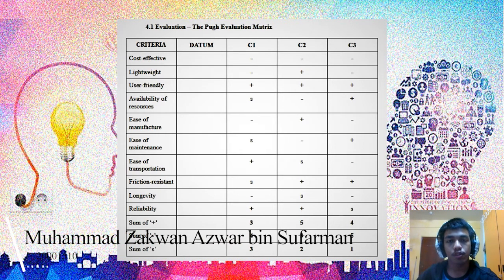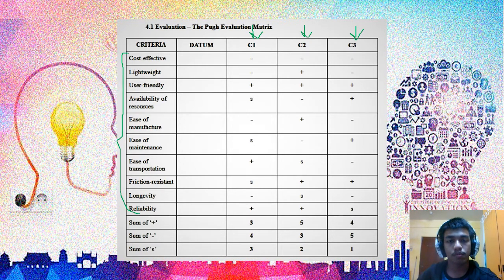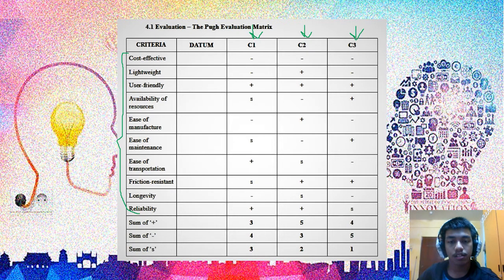Now I'm going to evaluate those three concepts using the Pugh evaluation matrix. This method allows us as innovators to filter the positives and negatives of each concept by comparing them to the datum — a regular trolley. For Concept 1, the sum of plus is three, sum of minus is four, and S (same) is three. For Concept 2, there are five plus, three minus, and two S. For Concept 3, there are four plus, five minus, and one S.